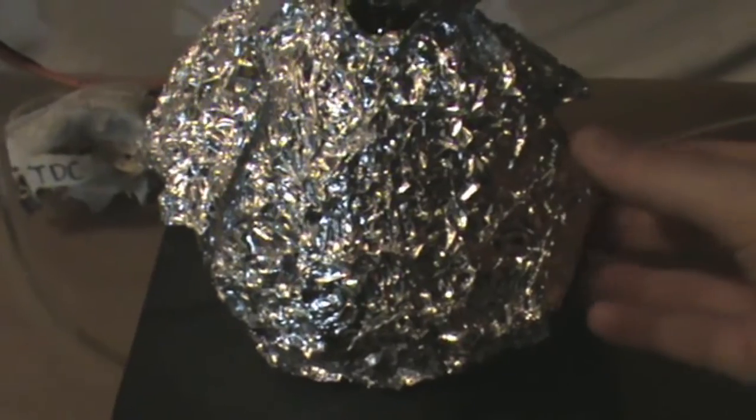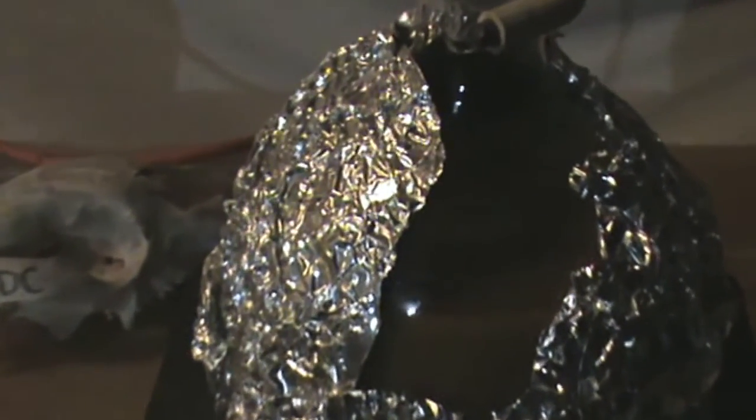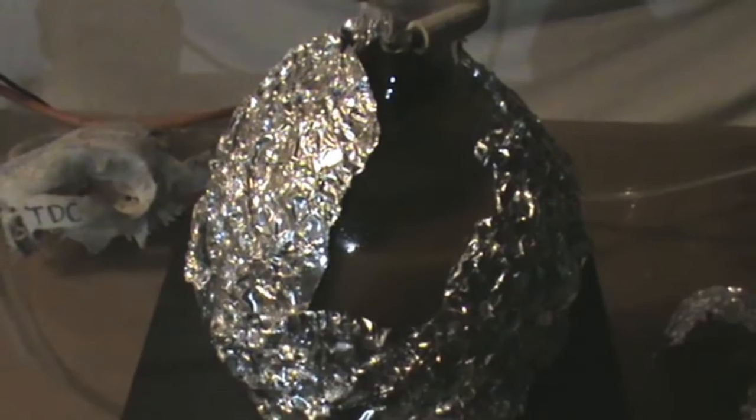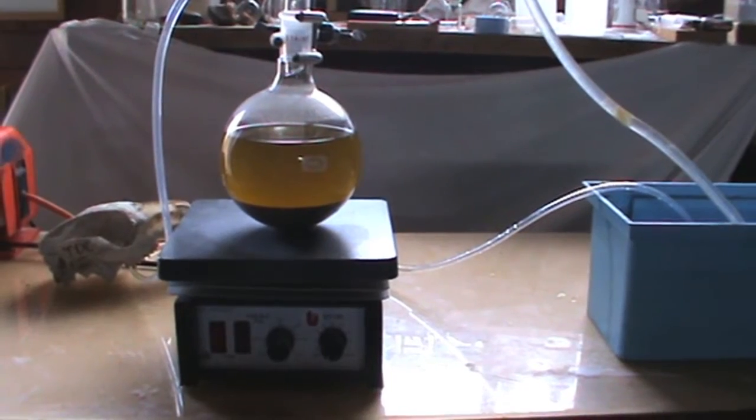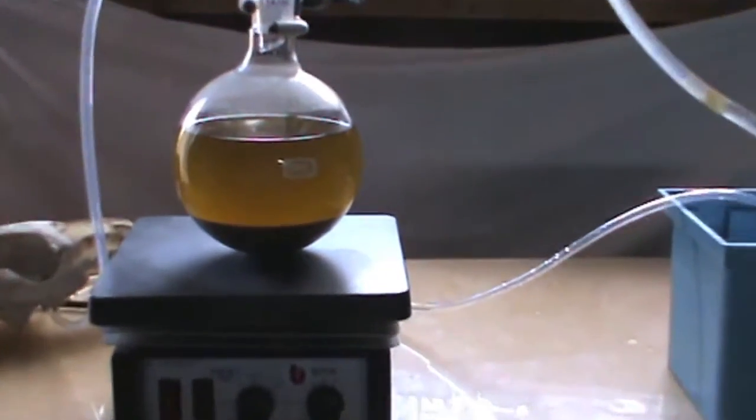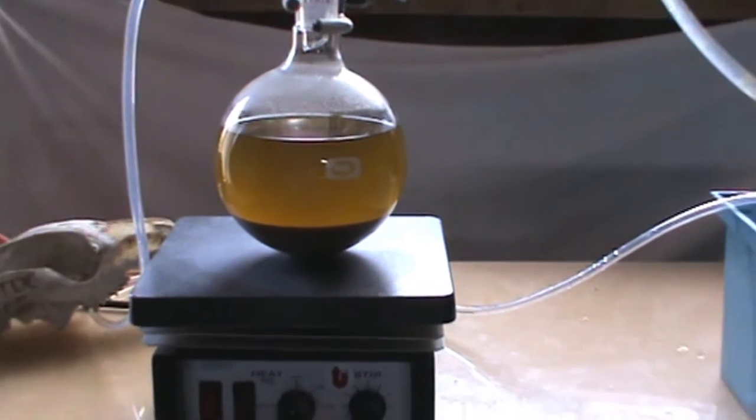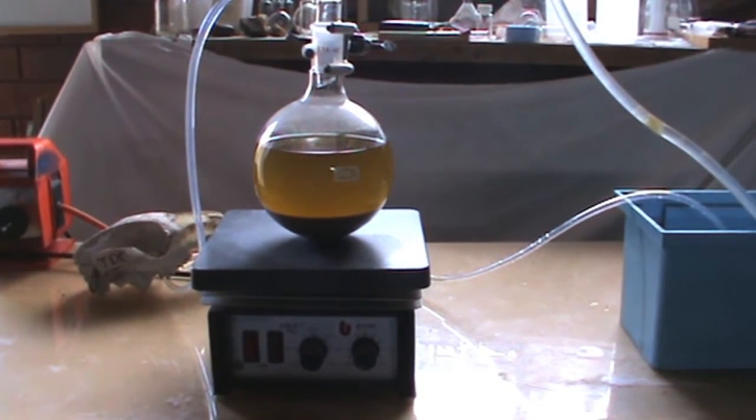After 5 hours, the extraction should be complete. Turn the hot plate off and remove the aluminum foil wrapped around the round-bottom flask. Allow the mixture to cool to room temperature. As we can see, the mixture has a dark yellow to orange color.